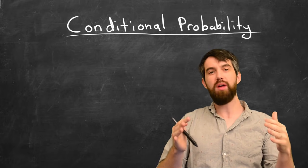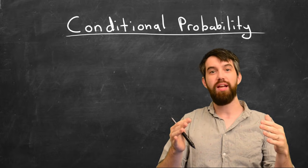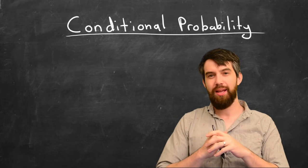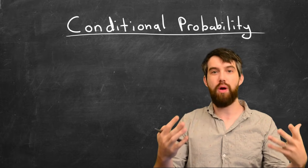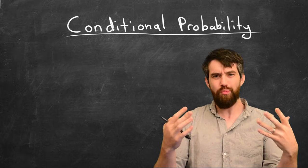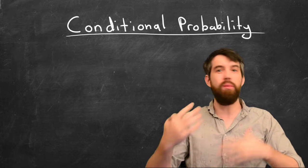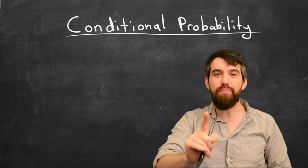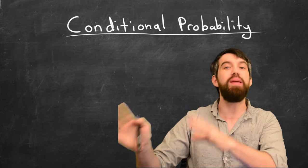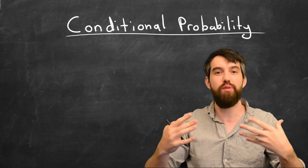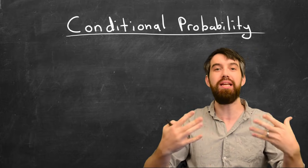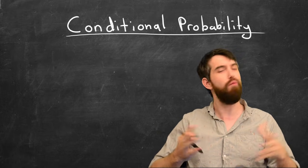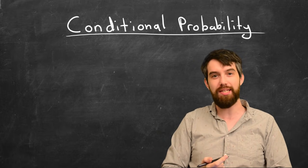In this video, we're going to talk about something called conditional probability. The idea with conditional probability is that we want to figure out the probability of something given that we have some other piece of information — some other piece of information that we can bring to the table that will influence the probability of whatever it is that we're investigating.